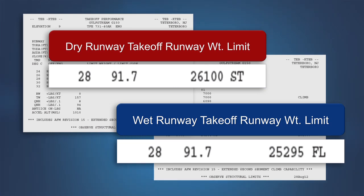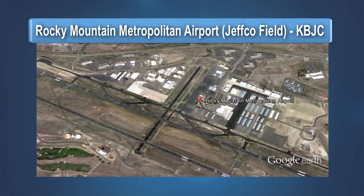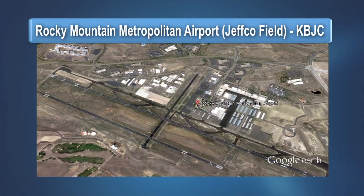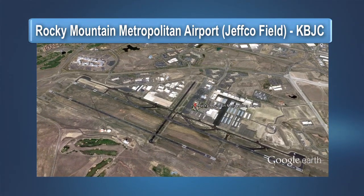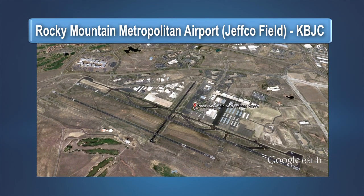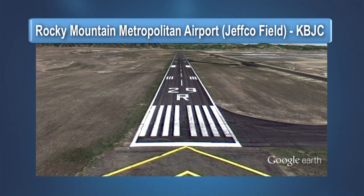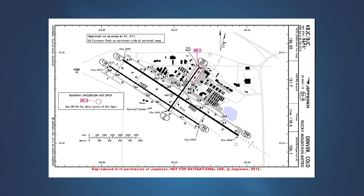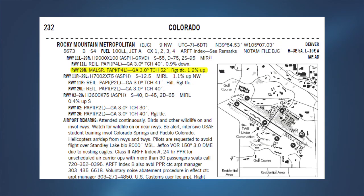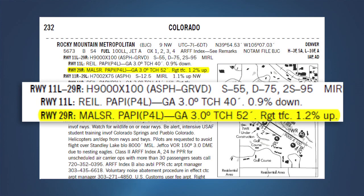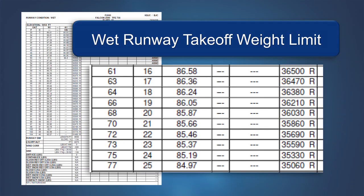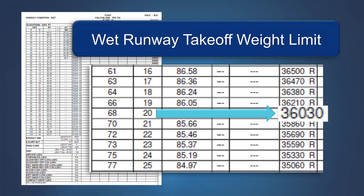However, there are exceptions. Rocky Mountain Regional Airport, better known as Jeffco, presents an interesting wet runway example for some turbojet airplane types. Runway 11L/29R is the primary runway used by jet airplanes. Runway 29R is 9,000 feet in length and has an upslope of 1.2 percent. A check of a takeoff analysis for one particular business jet type finds that the takeoff weight limit on a wet runway at 20 degrees Celsius appears to be 36,030 pounds.